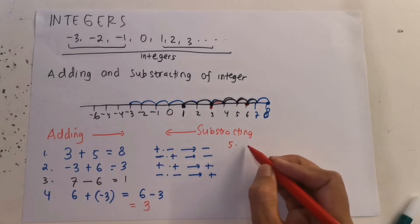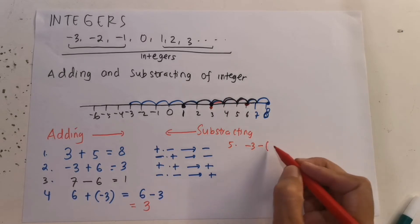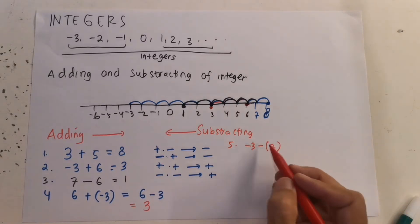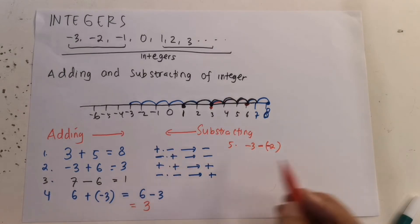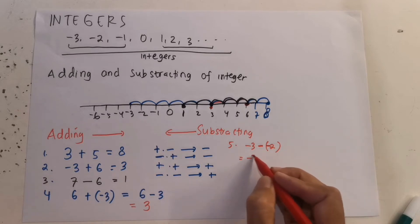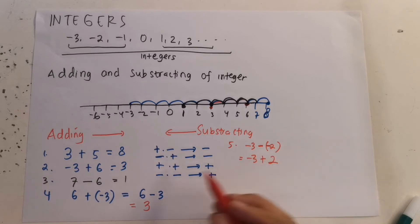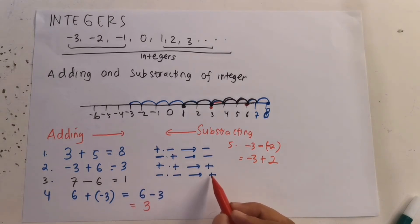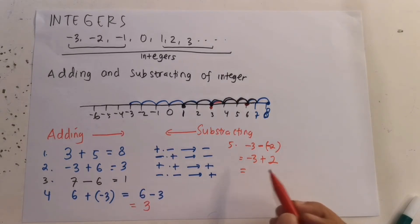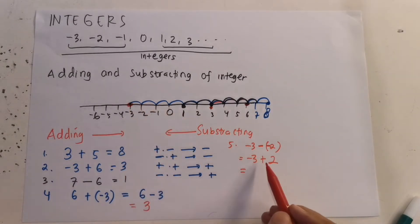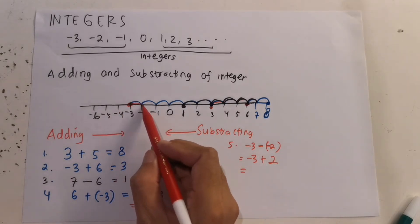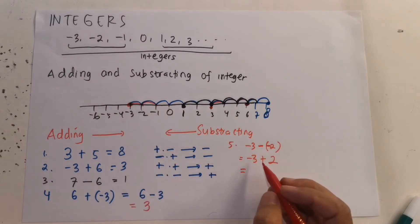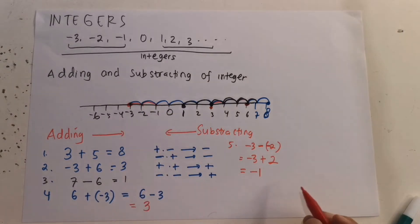Next example: negative 3 minus 2. This is minus meets minus, so the result becomes plus. So it equals negative 3 plus 2. We start from negative 3 and because we are adding 2, we move 2 places to the right — 1, 2 — and the answer is negative 1.